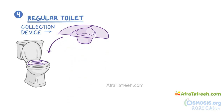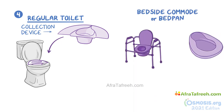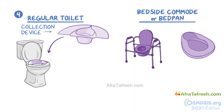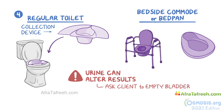For people who can't use the toilet, a bedside commode or a bedpan can be used. It's important to remember that urine can alter the results, so ask the client to empty their bladder before collecting the stool. If the client can't use the toilet, provide them with a voiding device.